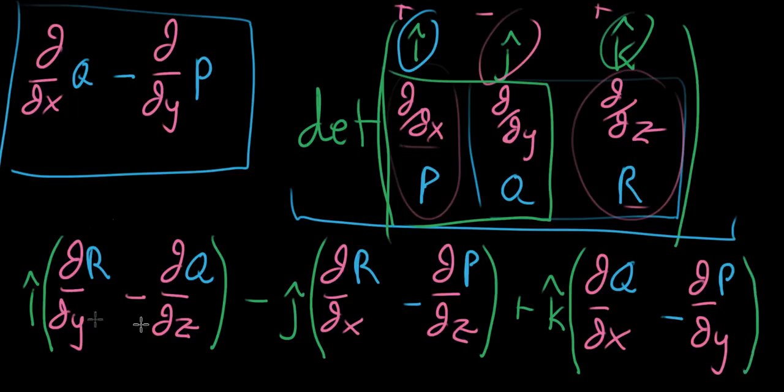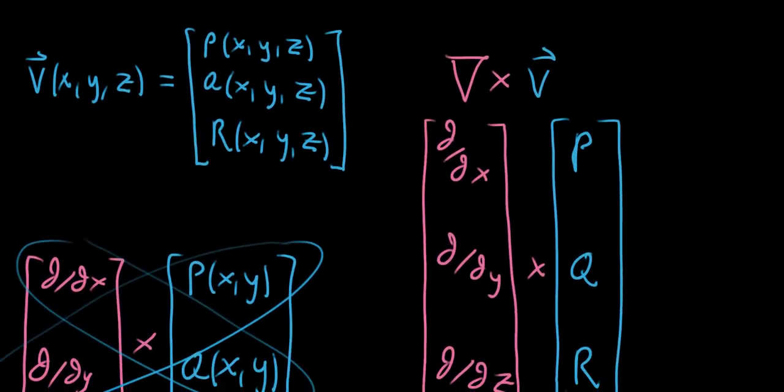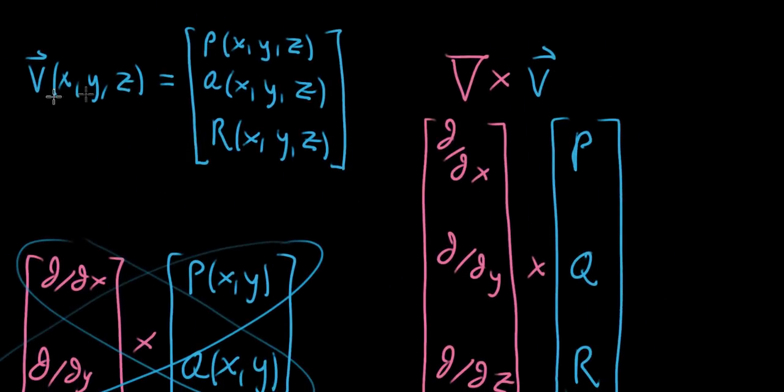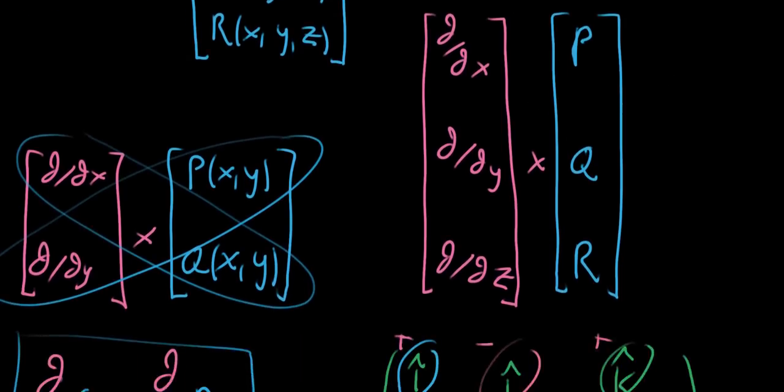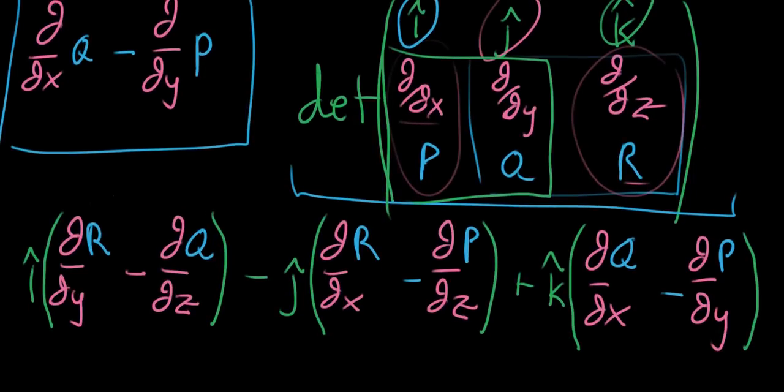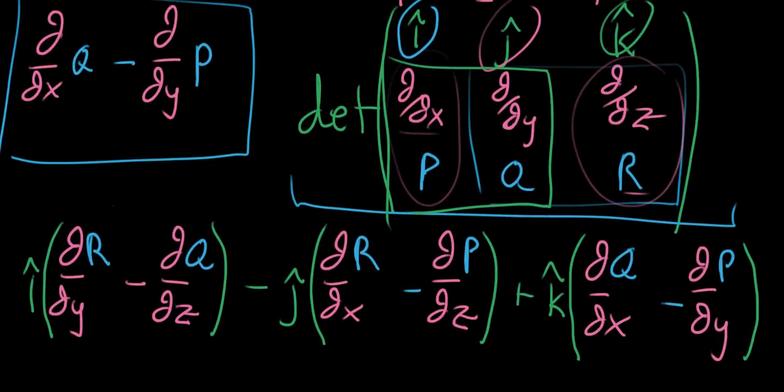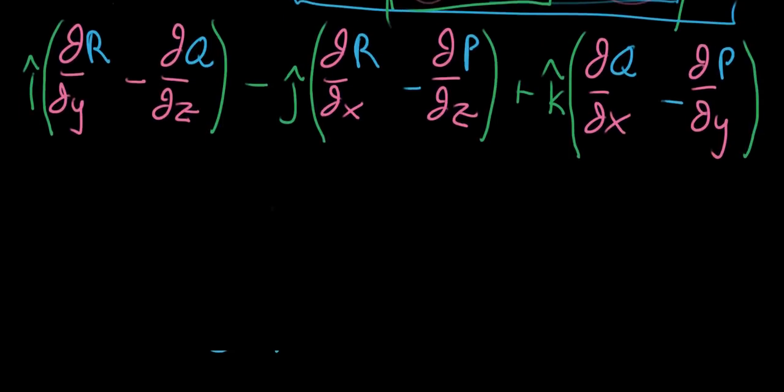And that entire expression is the three-dimensional curl of the function whose components are p, q, and r. So here we have our vector-valued function v, whose components are p, q, and r. And when you go through this whole process of imagining the cross-product between the del operator, this nabla symbol, and the vector output p, q, and r, what you get is this whole expression. And here we're writing it with i, j, k notation.